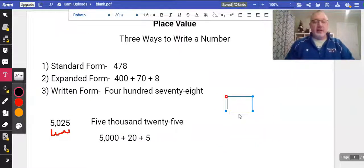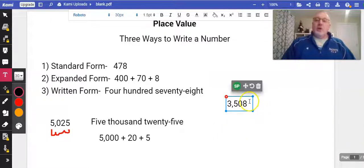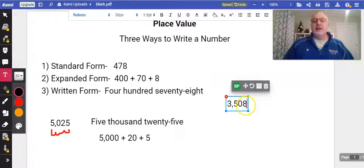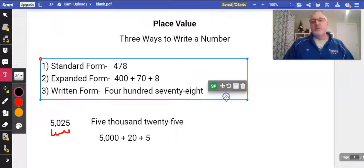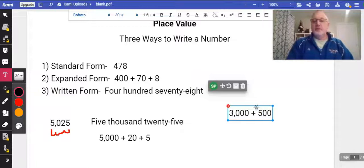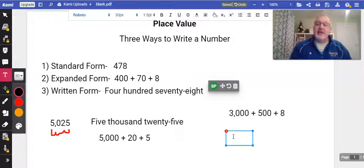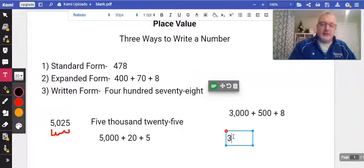A lot of times this is where kids really break down. 3,000 plus 500 plus 8. So what are they going to do? Let's put that in expanded form though, so we do that, I should have done that. So 3,000 plus 500 plus 8. Now here's where kids really run into some issues.